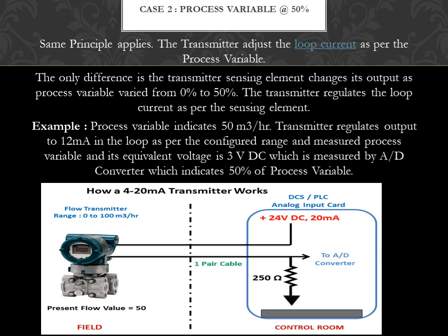Case 2: process variable at 50%. The same principle applies. The transmitter adjusts the loop current as per the process variable. The only difference is the transmitter sensing element changes its output as the process variable varies from 0% to 50%. The transmitter regulates the loop current as per the sensing element. Example: process variable indicates 50 m³/hr. The transmitter regulates output to 12mA in the loop as per the configured range and measured process variable, and its equivalent voltage is 3VDC, which is measured by the A/D converter and indicates 50% of process variable.